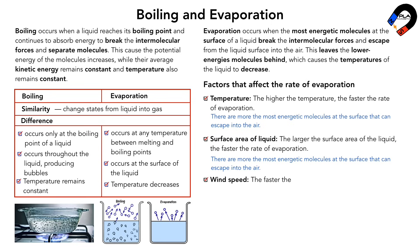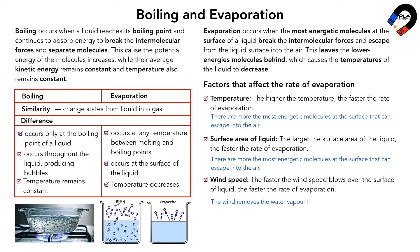Wind speed: the faster the wind speed blows over the surface of the liquid, the faster the rate of evaporation. This is because the wind removes the water vapor from the surface of the liquid, allowing more water vapor to escape.